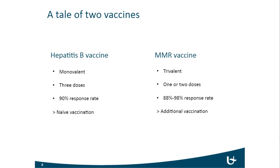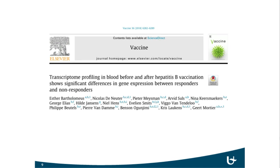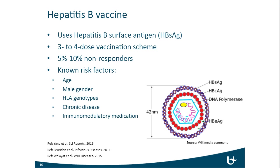To start, I'll talk about our hepatitis B vaccination study, published recently in Vaccine, where we explored transcriptome profiles before and after the vaccination event and correlated this to the vaccine response. This vaccine uses the hepatitis B surface antigen and has about five to ten percent non-responders. Known risk factors for non-response include age, male gender, specific HLA genotypes, chronic disease, and immunomodulatory medications.